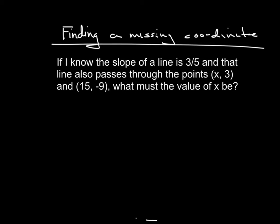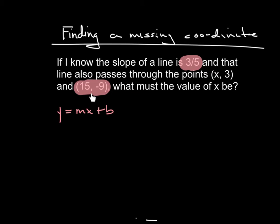I have a slope of three-fifths and I have a point. Well, if I have a slope and I have a point, I can write the equation of a line. And why do I want to write the equation of a line? Because if I have the equation of a line, by plugging values into that equation, I can figure out other parts of the coordinates. So we're going to write y = mx + b, and fill in with this particular slope and point to figure out what b is, because b is the only thing I don't know.